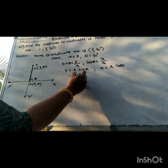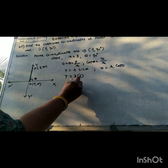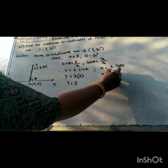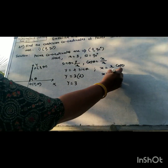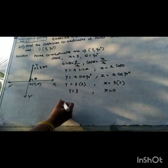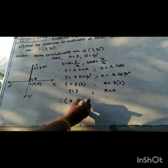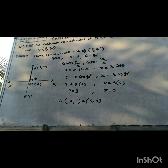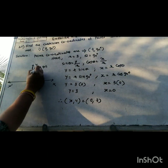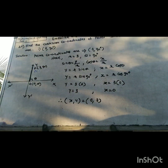Substituting the values: r equals 3 and sin 90° equals 1, so the y-coordinate is 3 times 1, which gives y equal to 3. And cos 90° equals 0, so the x-coordinate is 3 times 0, giving x equal to 0. Therefore the Cartesian coordinates of point P are (0, 3).